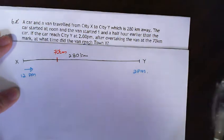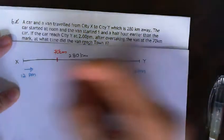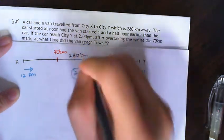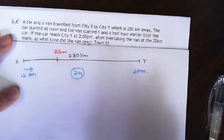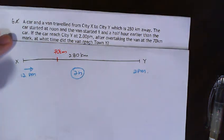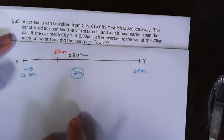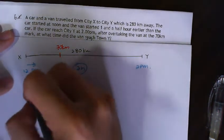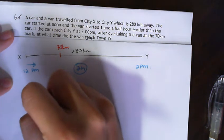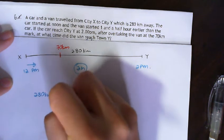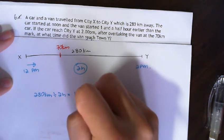Now from this, I know that the difference here is two hours, so basically the car took two hours to complete the whole journey. Now, if the car actually took two hours to travel the whole journey, what is the speed? The speed is 280 km divided by 2 hours, which equals 140 km per hour.